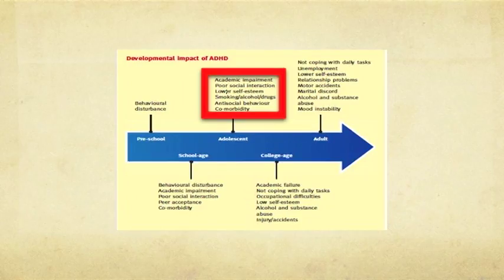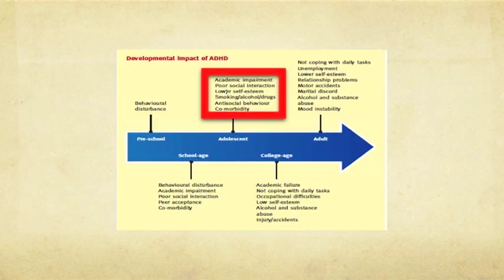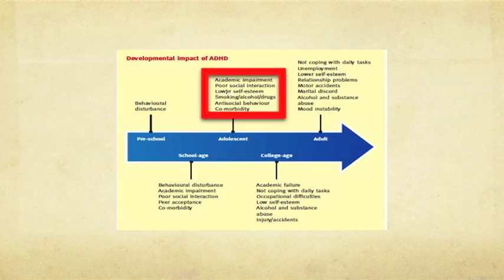Adolescents with ADHD also experience poor social interaction and, for many, the beginning of low self-esteem after years of feedback from peers and teachers that their behavior doesn't match others in their classroom, peer group, or sports team. Adolescence is also a time of risky behaviors generally, and kids with ADHD are at greater risk for poor decisions around smoking, alcohol, and drug use due to impulsivity or poor decision-making. For some kids there may also be the beginnings of antisocial behaviors, and then the comorbidities continue.